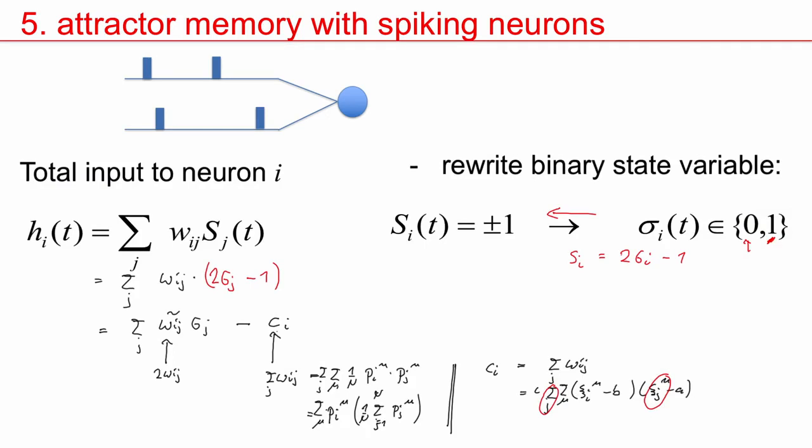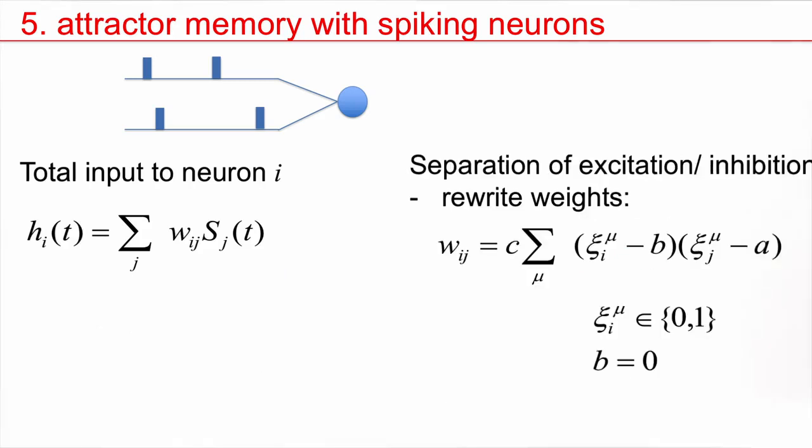With these new variables, 0 and 1, it's much easier to interpret input as spikes. I will have many different time steps, and in each time step, there's a value of 1, or else there's 0. This was the first step. We went from S to binary variables sigma. Now, the second step is, we would like to separate excitation and inhibition.